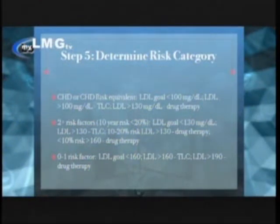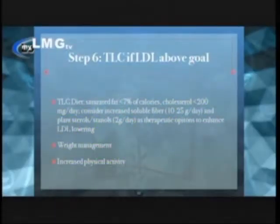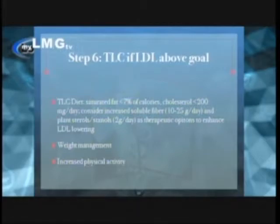Step five is to determine the risk category, which looks at the category for coronary heart disease in terms of LDL goal. Patients who have high risk for coronary heart disease should reach an LDL goal of less than 100. Patients with low risk have an LDL goal of less than 130.